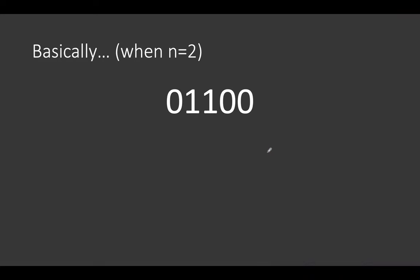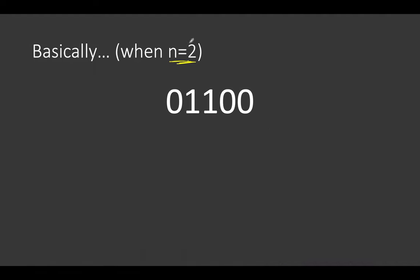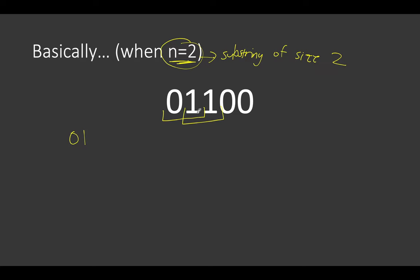We'll use the case when n equals 2. When n equals 2, we're looking at every possible substring of length n, so our substrings will be of size 2 — two characters each. The first substring we can get from this sequence of characters is '01', another substring of size 2 we can generate is '11', another possible substring is '10'.